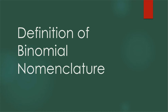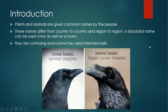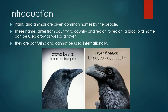Today's lesson is about the definition of binomial nomenclature. Plants and animals were given common names by people, and these common names differ from country to country and region to region. For example, the name 'blackbird' was given to both crows and ravens. The disadvantage of these common names is that they are very confusing and cannot be used internationally.